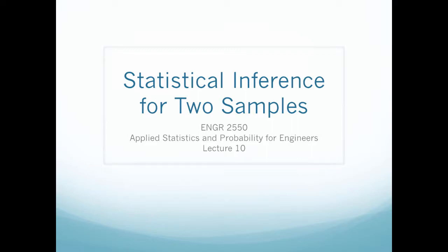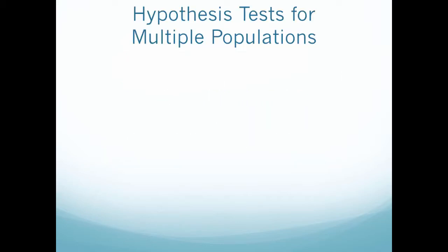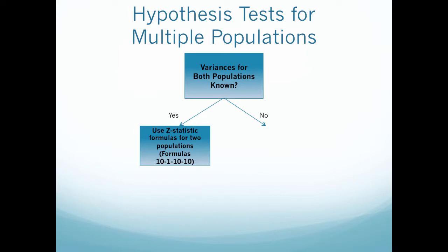Welcome back to our next video for our statistical inference for two samples chapter. We're going to now continue with the rest of this flowchart that we were discussing. So we previously did this side. We previously found out that when my variance is known for both populations, I use my z-statistic formulas for those two populations.